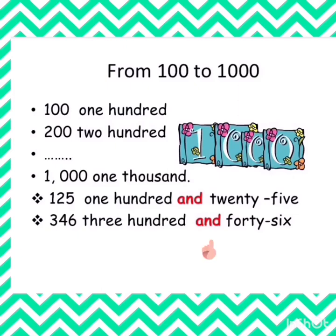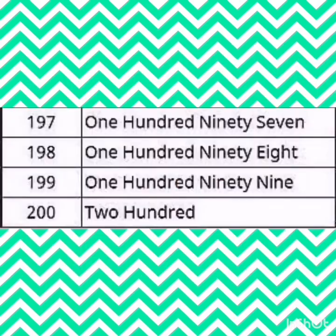We don't add 'and' while writing number names. It's 125, 346. Let's look at a few other numbers like 197, 198, 199, 200 — that's the way we write numbers in words, so they are called number names. We don't add 'and'.